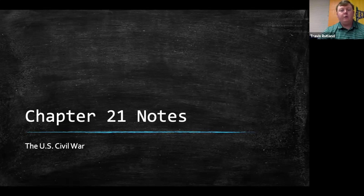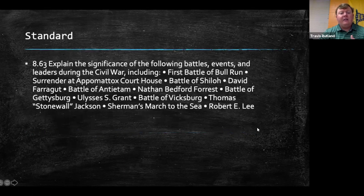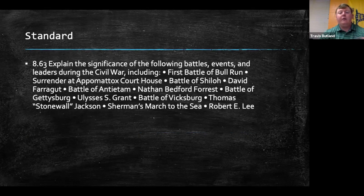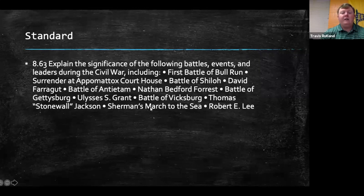Welcome back today. We're going to be going over part of Chapter 21 notes, specifically looking at the major battles of the Civil War. We're looking at Standard 8.63 — a lengthy standard. We're going to explain the significance of the following battles, events, and leaders during the Civil War, including the First Battle of Bull Run, the Surrender at Appomattox Courthouse, Battle of Shiloh, Battle of Gettysburg, Battle of Vicksburg, and Sherman's March to the Sea. Later on, we'll be getting into some of these different leaders and events going on in the Civil War.